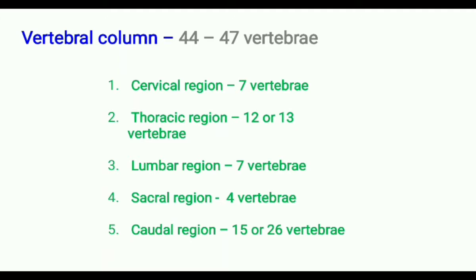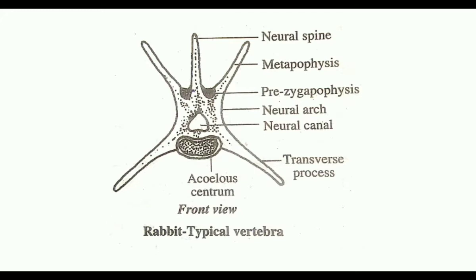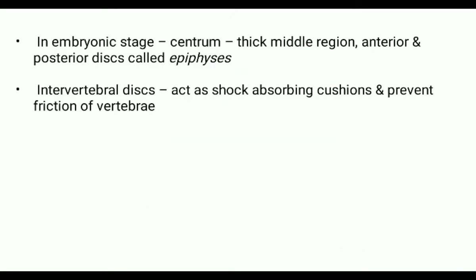Lumbar region contains 7 vertebrae, sacral region contains 4 vertebrae, and caudal region consists of 15 to 26 vertebrae. The vertebrae of rabbit are almost acoelous, meaning the centrum is flat at both ends. The vertebrae are also provided with intervertebral discs, which act as shock-absorbing cushions and prevent friction between vertebrae.